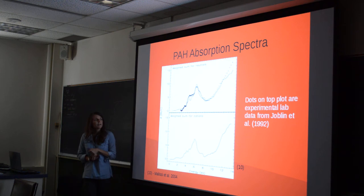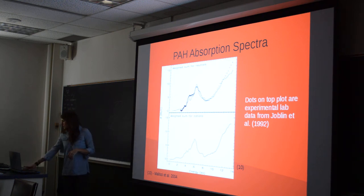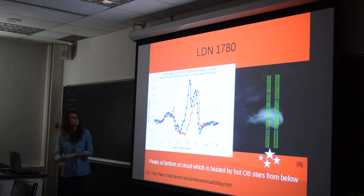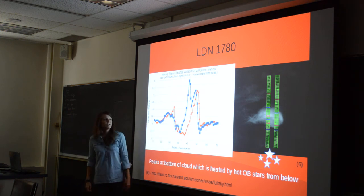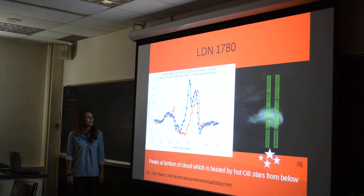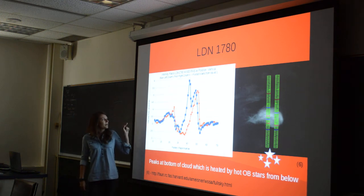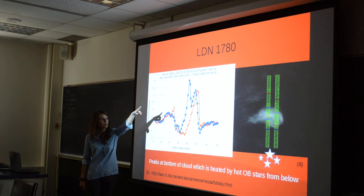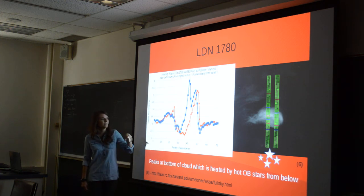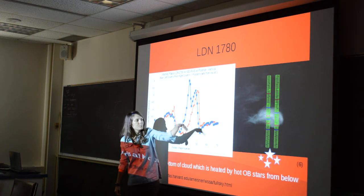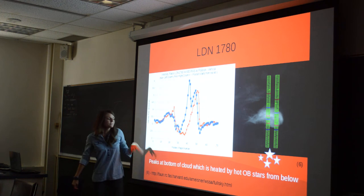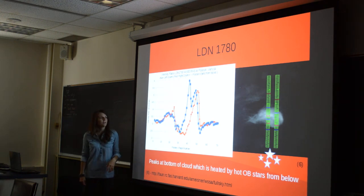We wanted to see what happens when PAHs are closer to a radiation source — like hot UV stars that are underneath this cloud, which is LBN 1780. This graph shows the ratio as a function of position, starting from the north and going south. The blue represents regions on the left and red is on the right. You can see a peak in emissions from the PAHs at the bottom of the cloud, because radiation is coming directly from the south.